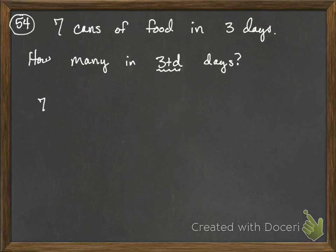how many cans of food does the dog eat in three plus d days? So, if you think about it, you have seven cans in a three-day period, then how many cans of food, x, is that in a three plus d day period?